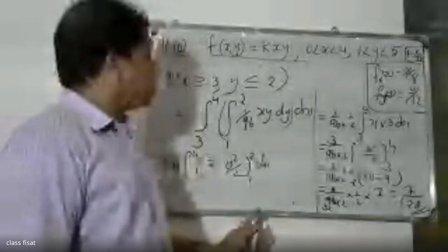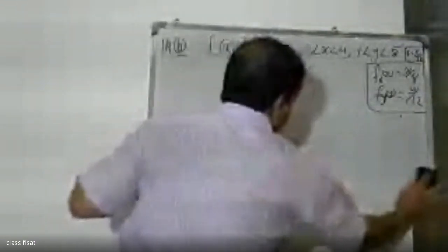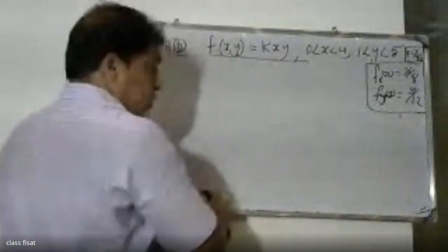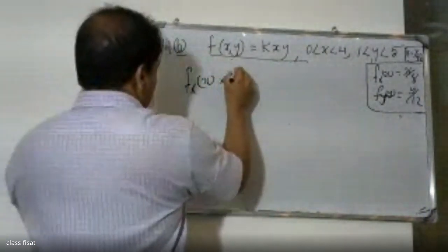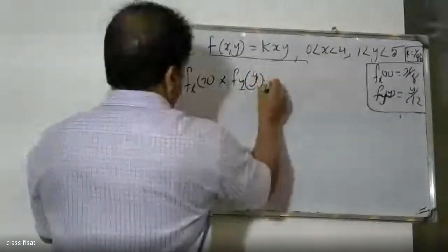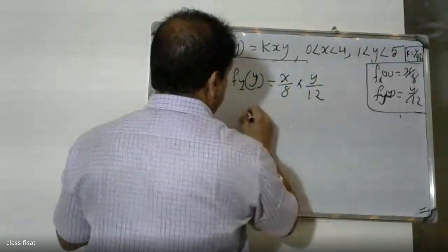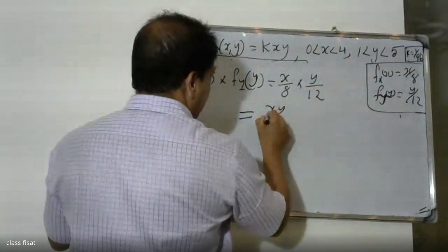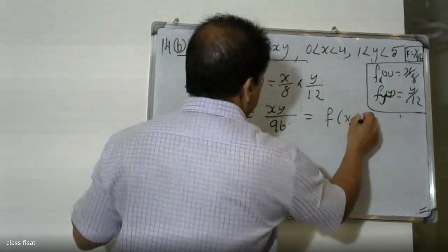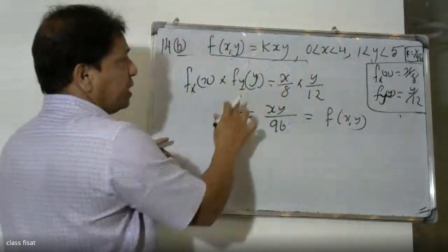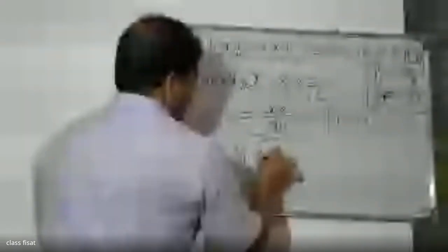Now we check whether X and Y are independent. X and Y are independent if and only if f(x,y) = fx(x) times fy(y). We check: fx(x) times fy(y) equals (x/8) times (y/8) = xy/64, but f(x,y) = xy/96. Since these are not equal, we examine further whether x and y are independent.